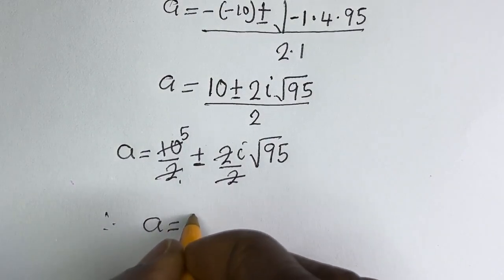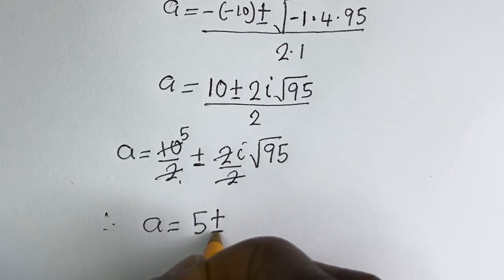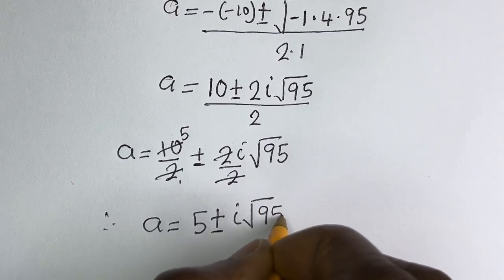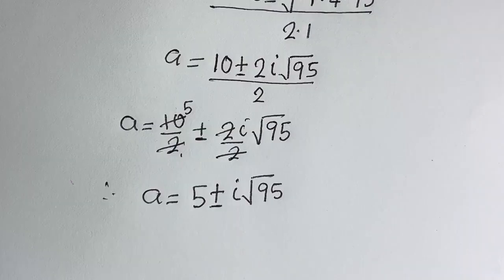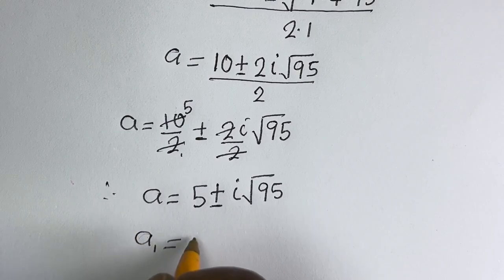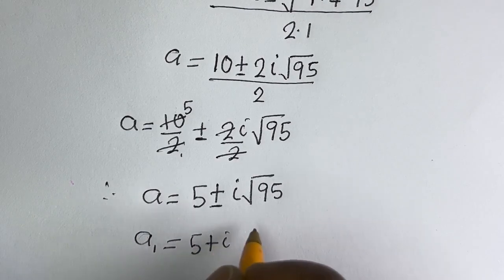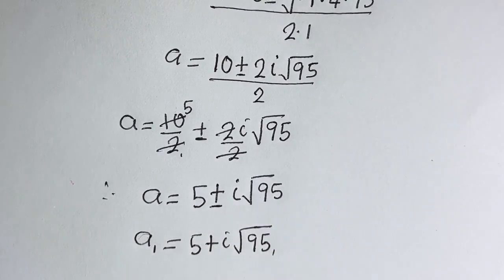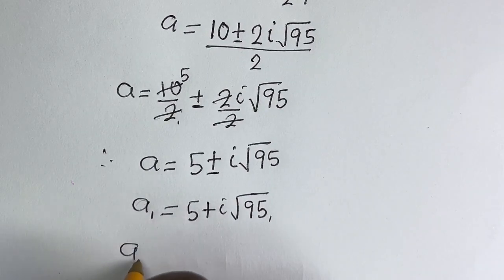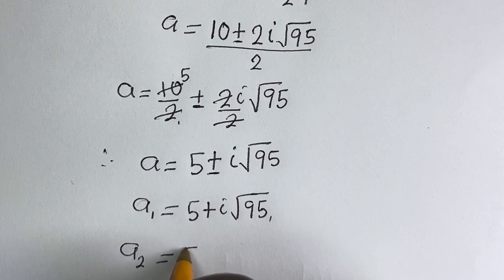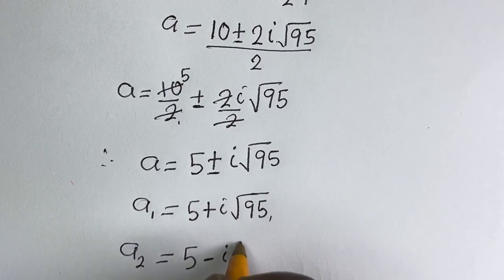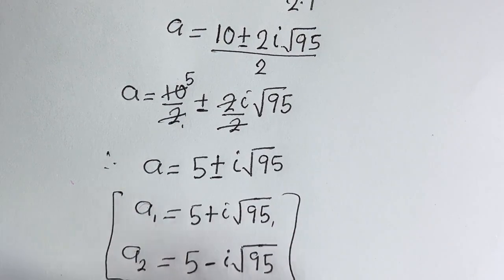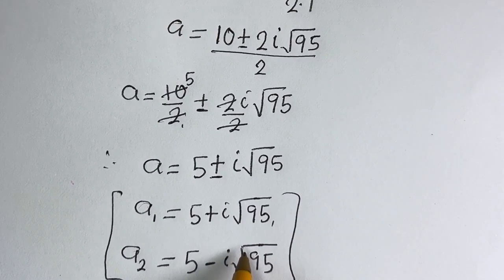Therefore, A is equal to 5 plus or minus i square root of 95. So A1 is equal to 5 plus i square root of 95, and A2 is equal to 5 minus i square root of 95. These are the values of A1 and A2.